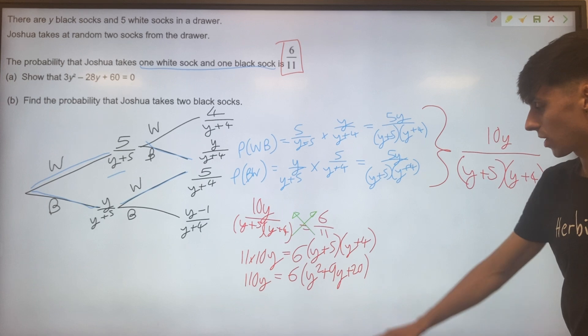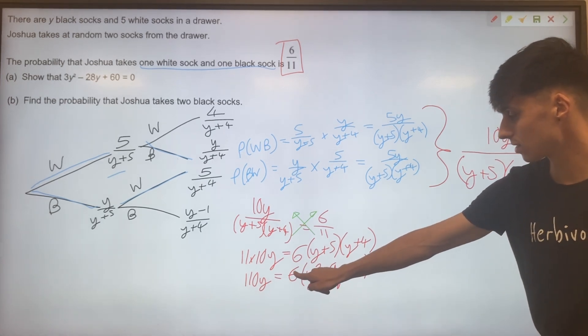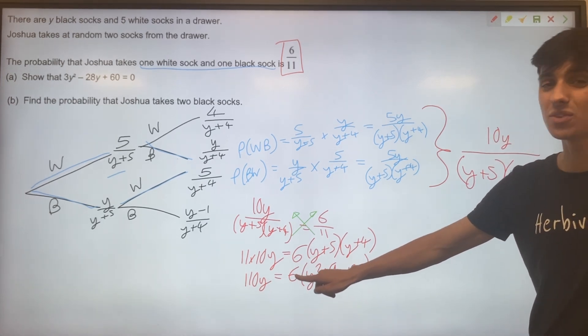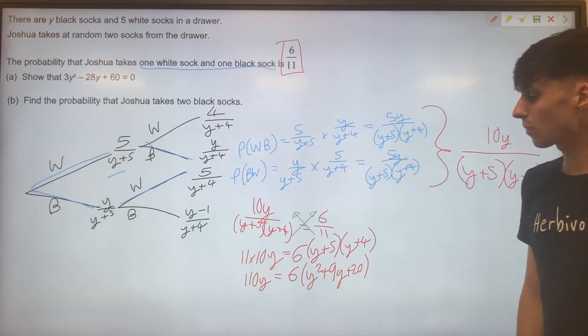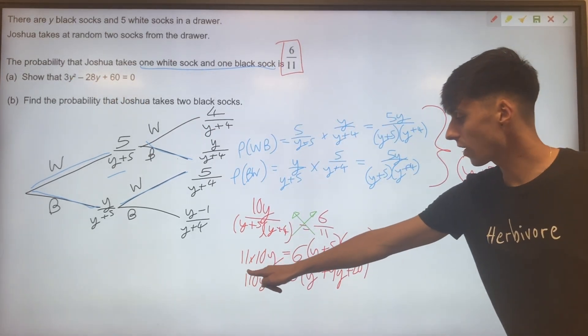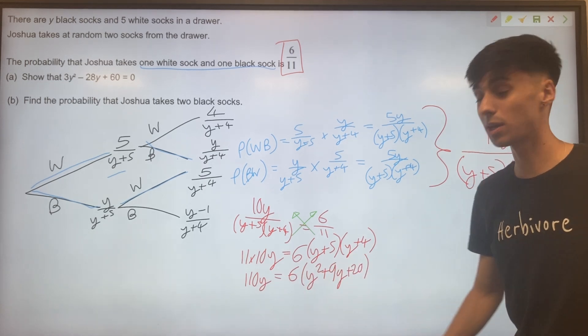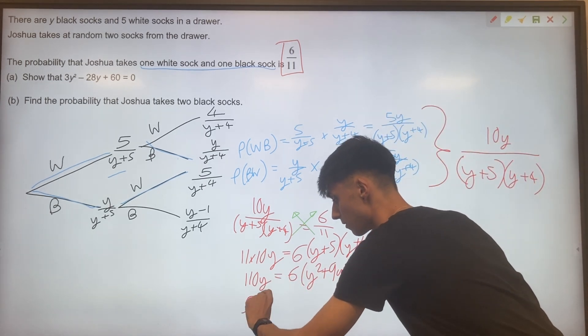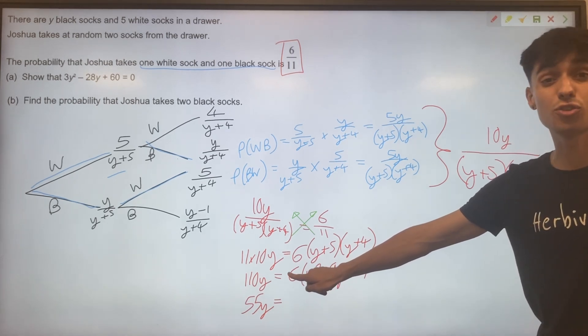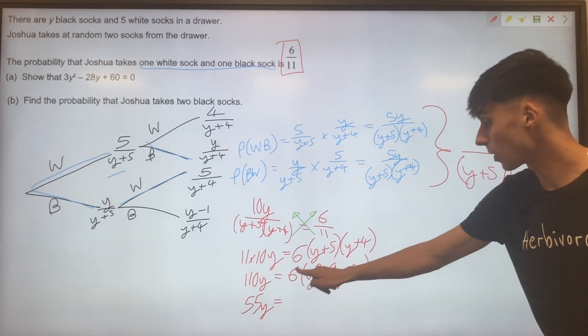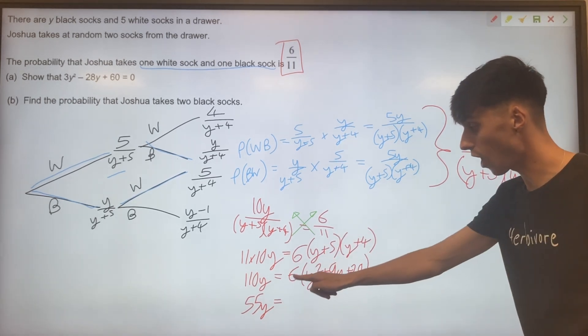One step to sort things out here is, look, we've got 6y squared. In our answer, we'd like to aim for 3y squared. So let's take out that factor of 2 at this point. We can divide this 110y by 2 to get 55y. This will just be a 3. So let's then multiply that 3 into those brackets, because we've halved both sides.